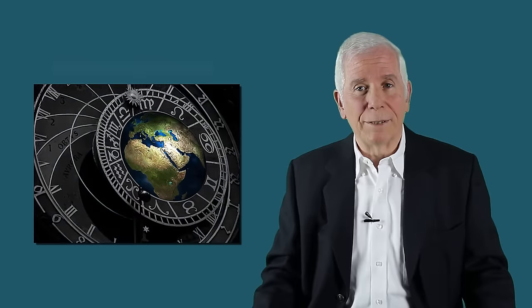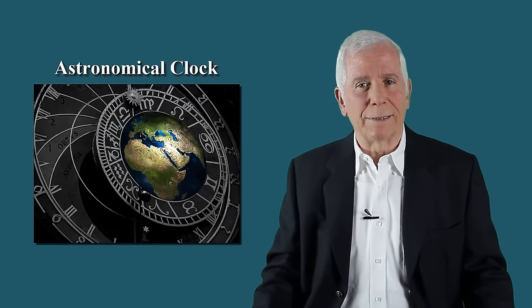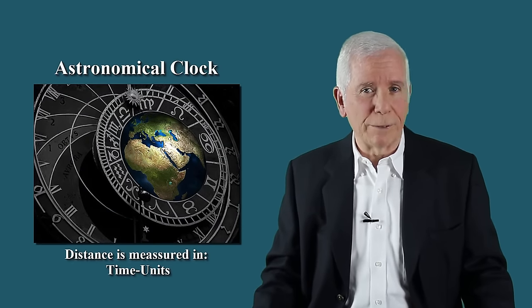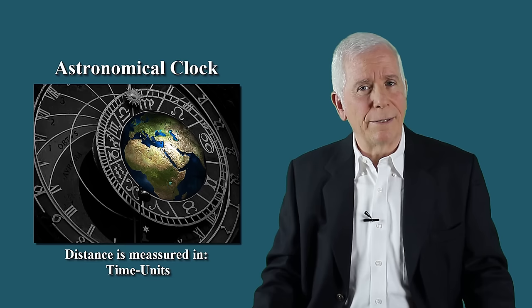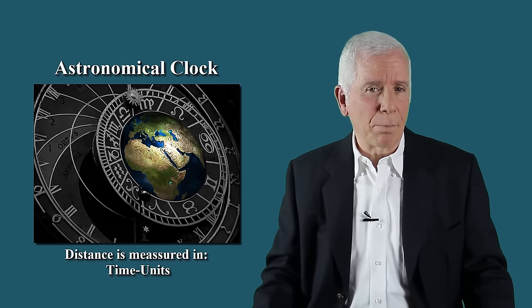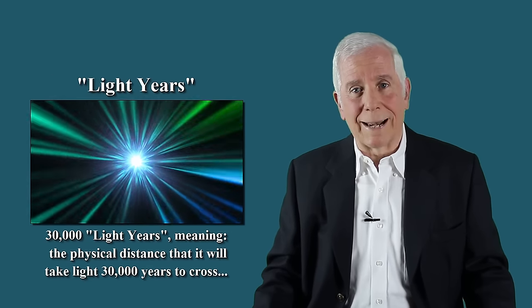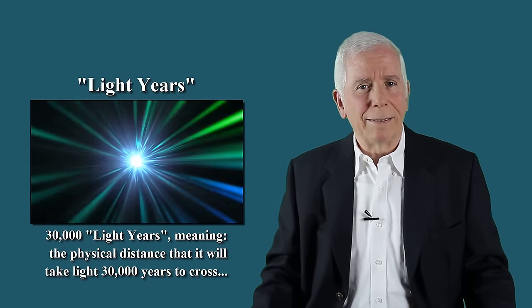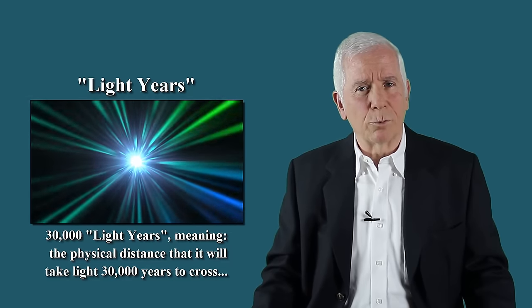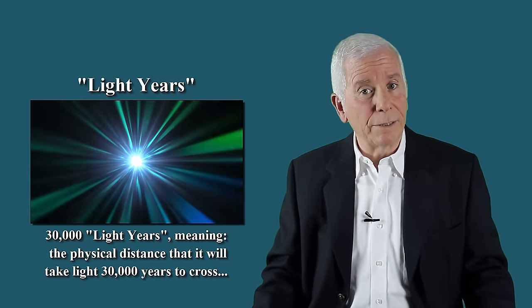In astronomy, it is customary to express distance not in units of physical distance, but rather in time units. For example, 30,000 light years, meaning the physical distance that it would take light 30,000 years to cross.